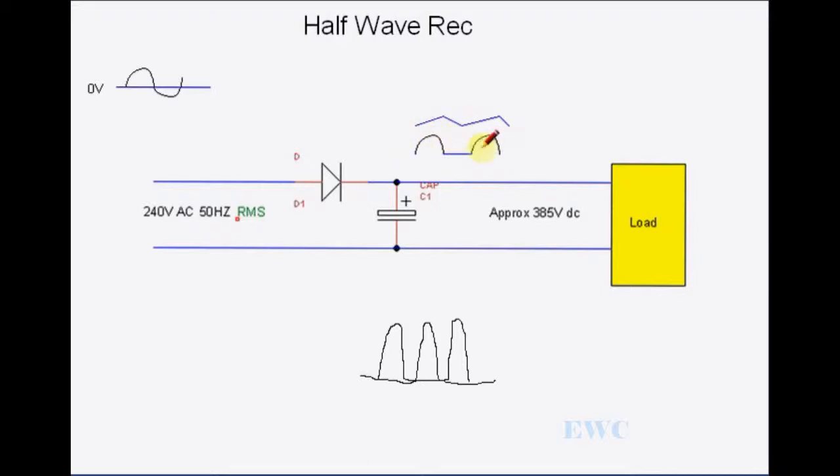So instead of this waveform here, you would get a kind of a waveform like this. The voltage would rise and rise as the capacitor charges. And then during this period here at 0 volts, it would start slowly discharging. So you would have nearly a straight line going across.